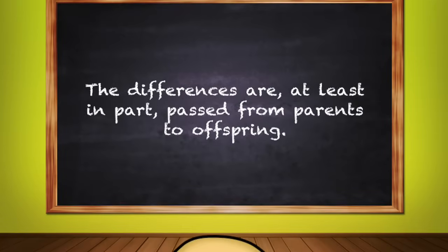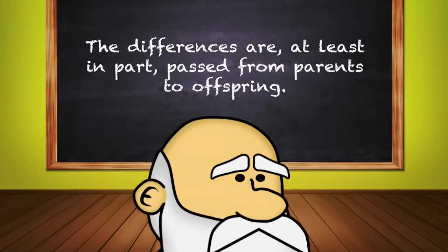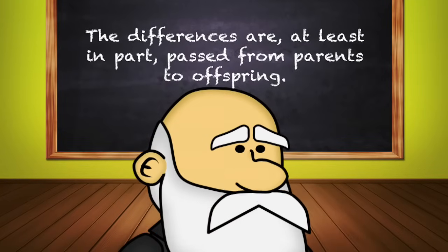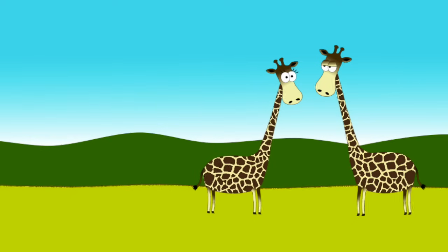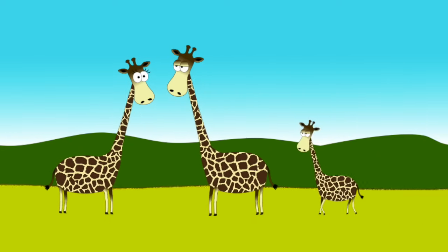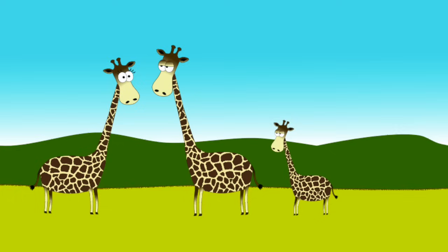Condition number two: The differences are, at least in part, passed from parents to offspring. Darwin's descent with modification is the idea that offspring are fairly similar to their parents, with some genetic differences.